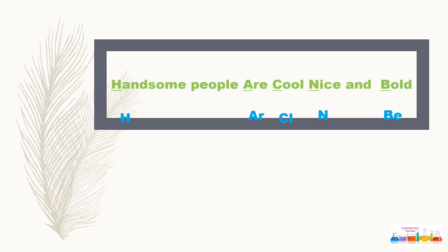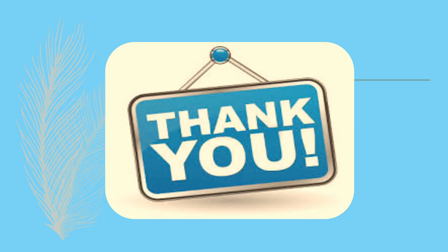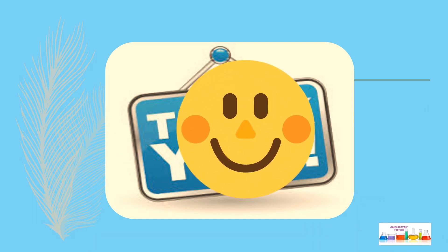Simply remember this sentence: handsome people are cool, nice, and bold. From handsome H you can take for hydrogen, R for argon, cool C for chlorine, nice N for nitrogen, bold B for beryllium. So in this way you can memorize the mass number of these exceptional cases as well. Thank you for watching my video. I hope it will be helpful for teachers and students. For further interesting chemistry videos, stay tuned with Chemistry Tutor HR.